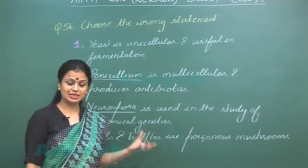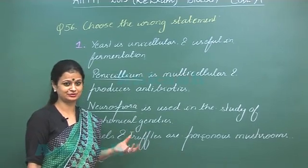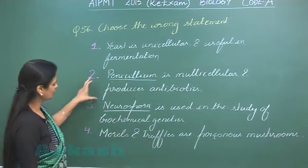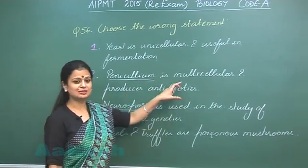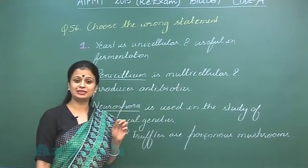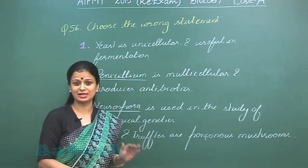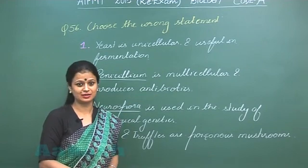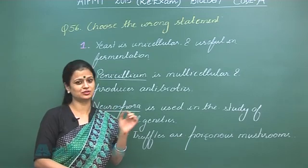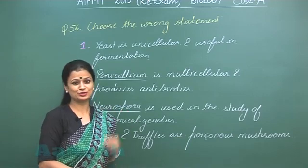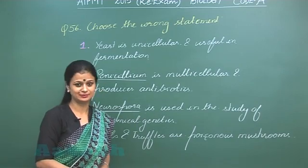Penicillium is a multicellular fungi, yes, it belongs to the group Ascomycetes, and the first antibiotic of fungal origin — penicillin — was obtained from this fungi. So this option is also correct.